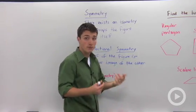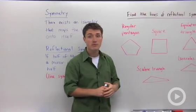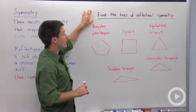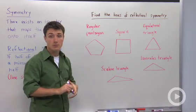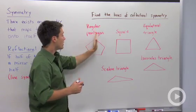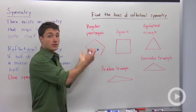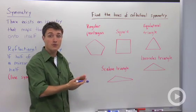Let's apply what we know about reflectional symmetry to some specific examples. Here we're being asked to find the lines of reflectional symmetry, which means what line could I draw on this pentagon so that I could fold the pentagon back onto itself and have an identical image?